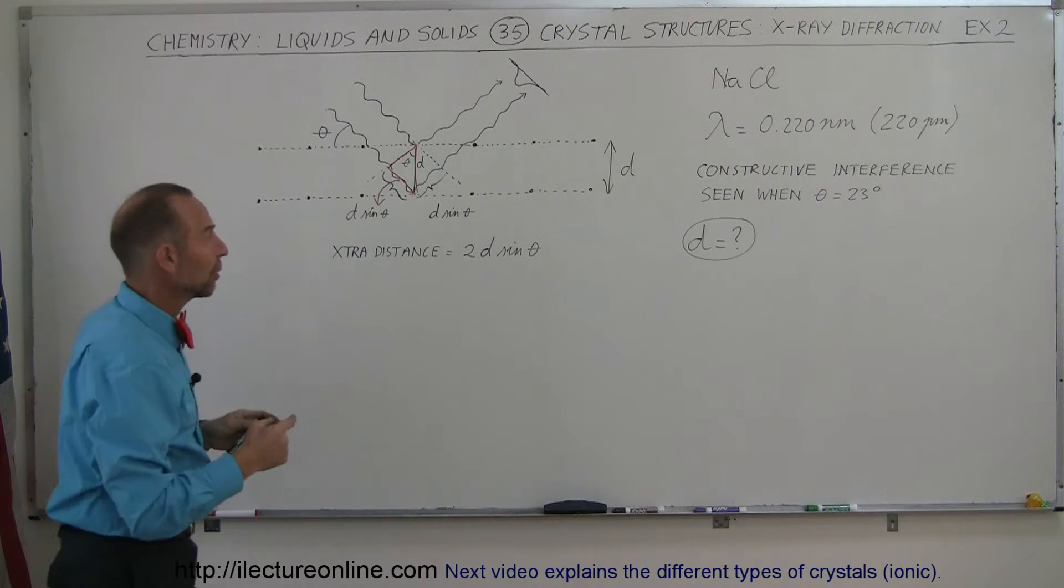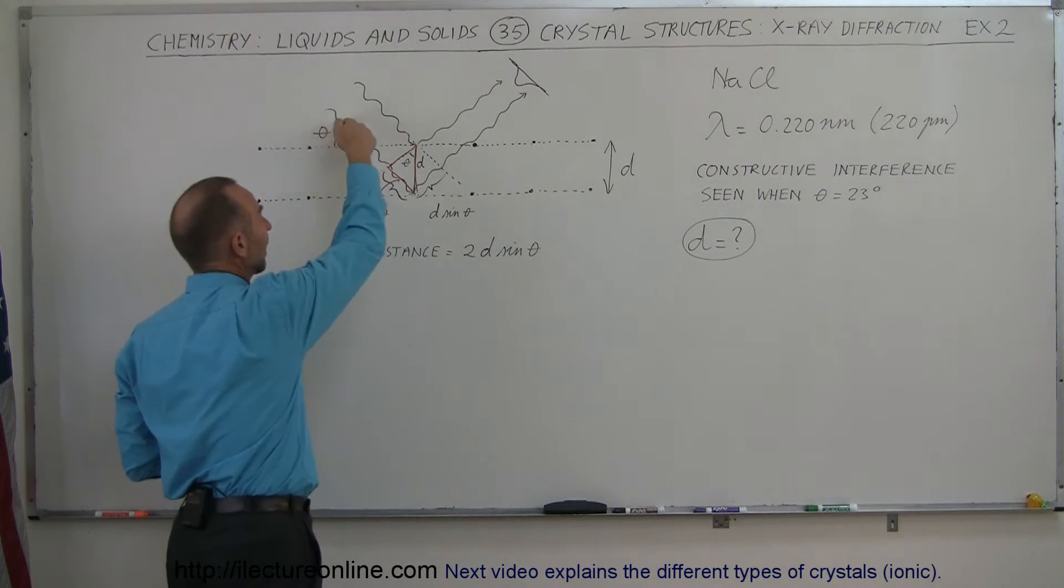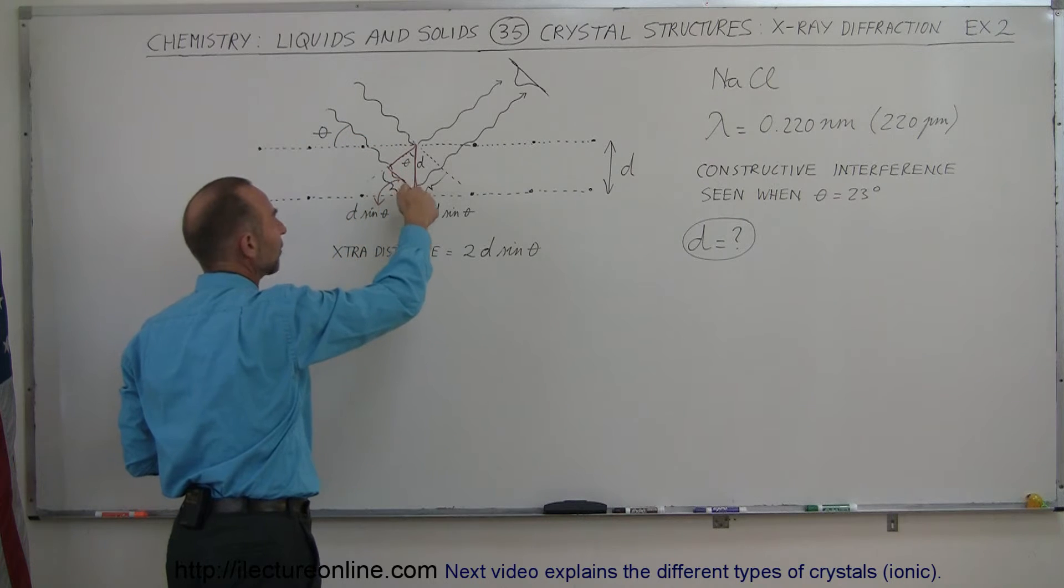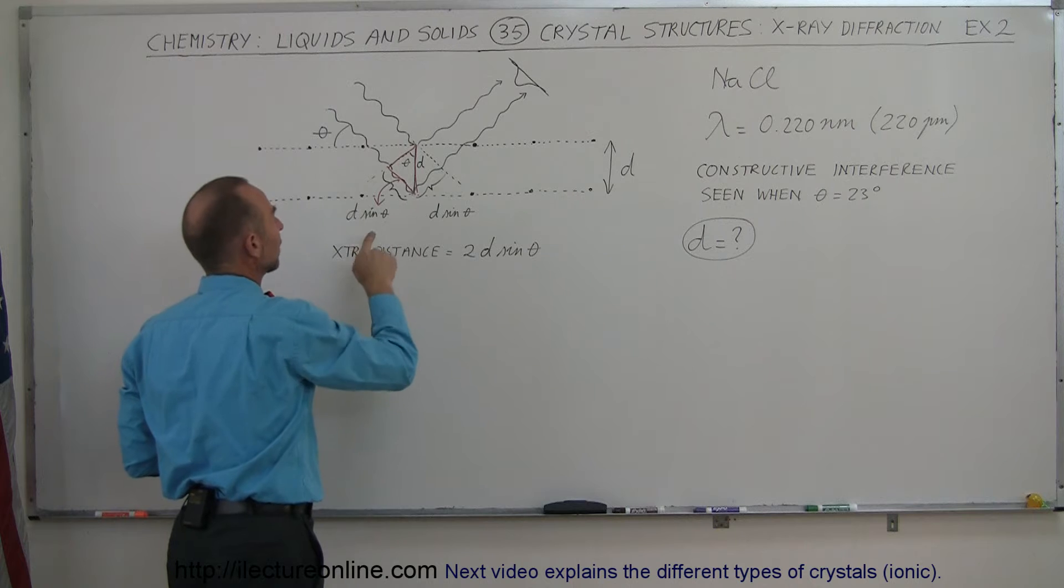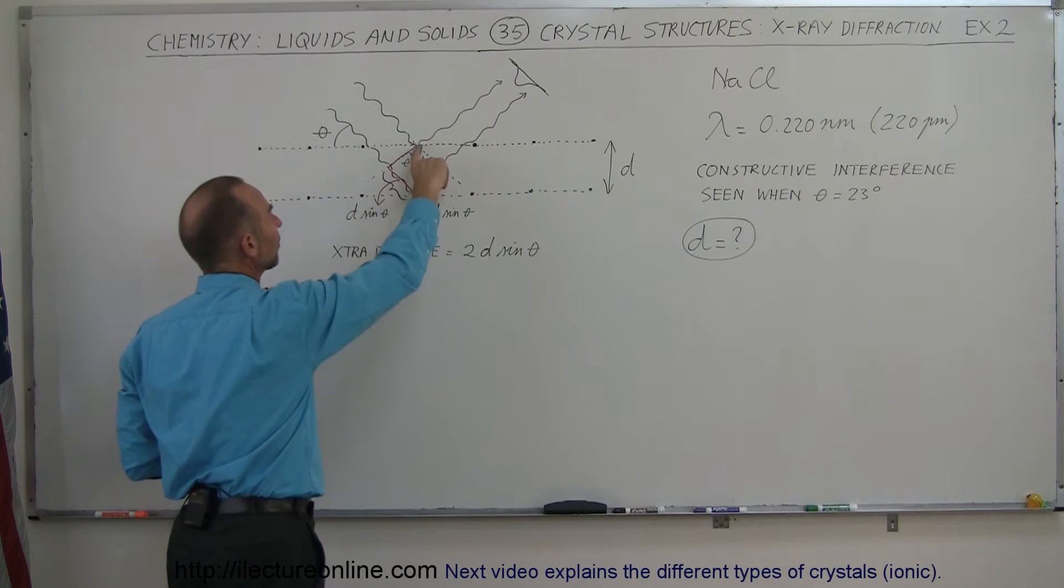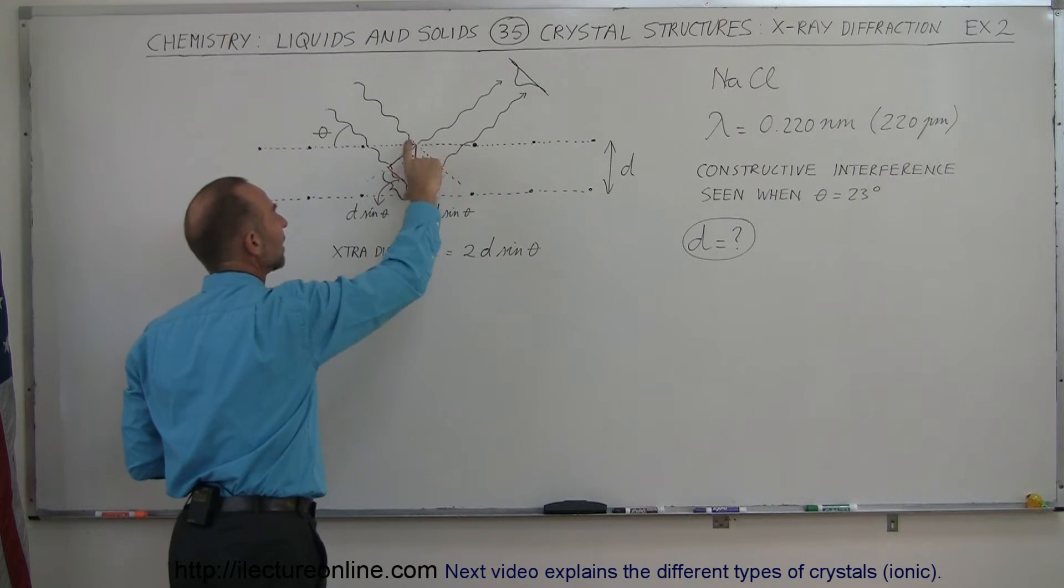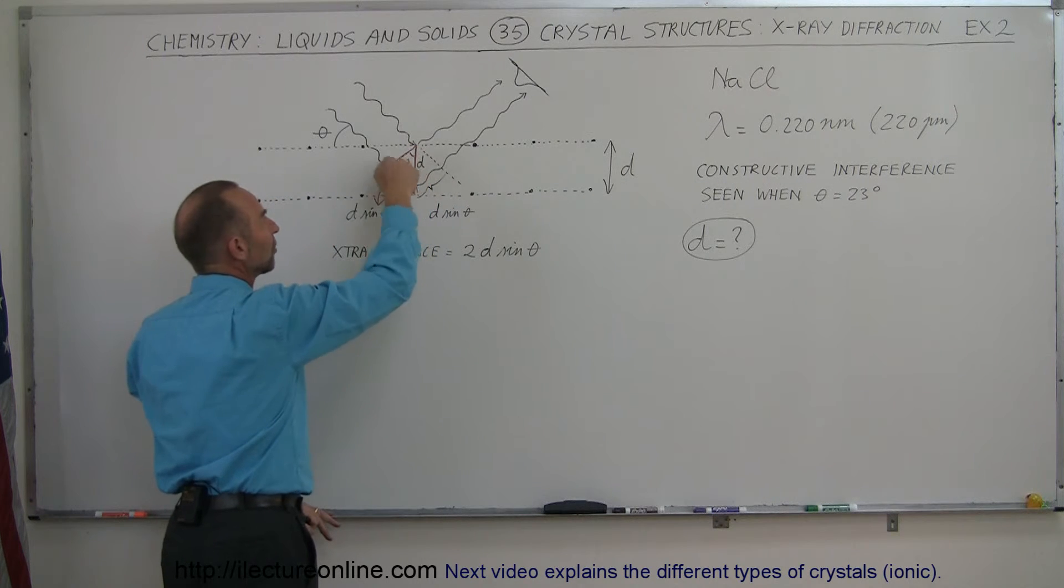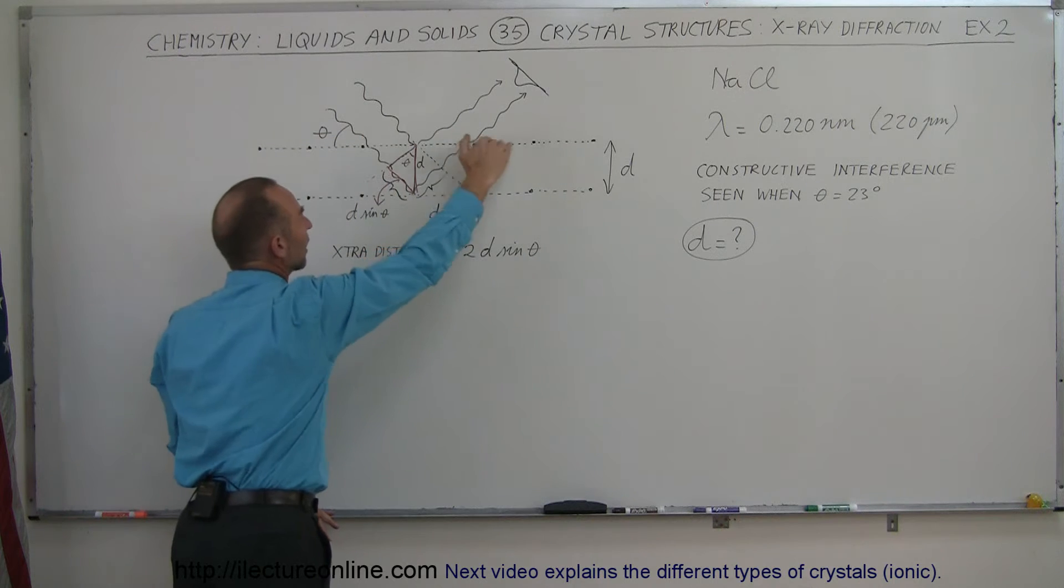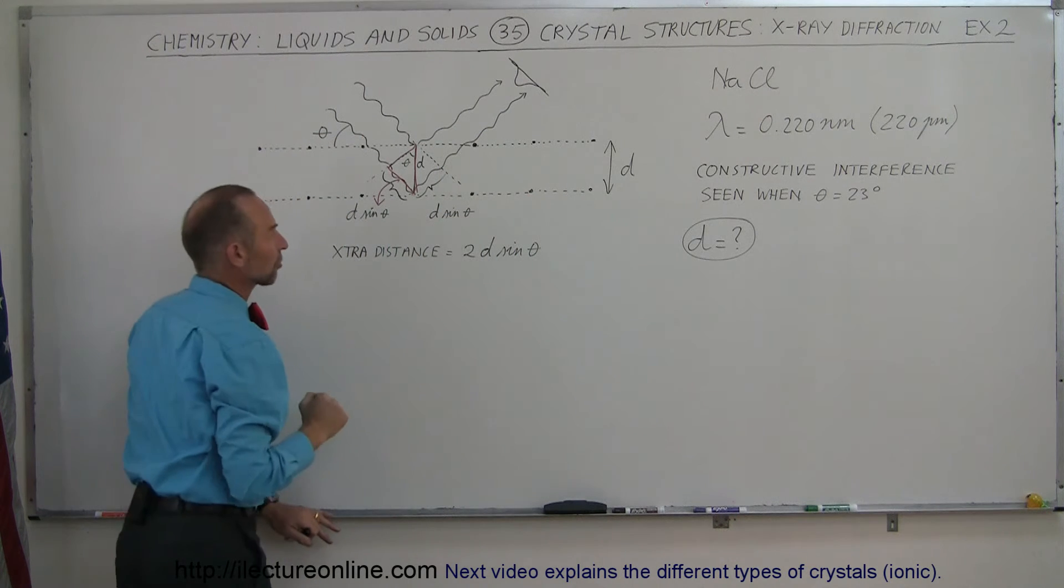Let's give it a try. First of all we have to realize that the second x-ray will travel the extra distance equal to this distance plus this distance right here. And that distance here is the separation distance of the crystals d times the sine of the angle theta. Notice that this is like a right triangle. This is the separation distance between the first layer and the second layer in the crystal structure.